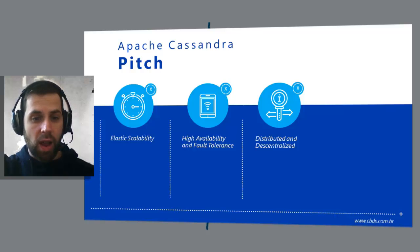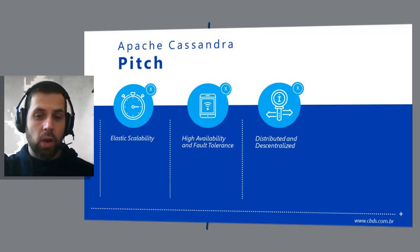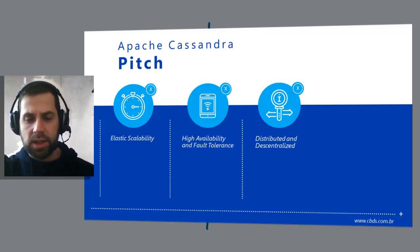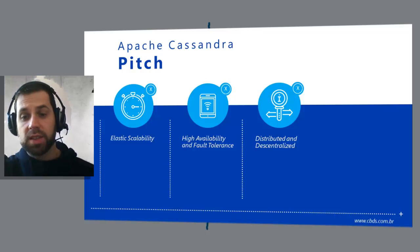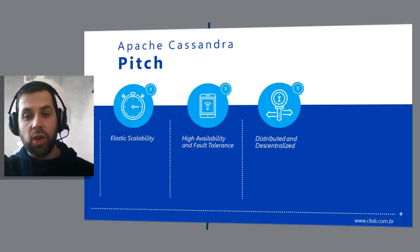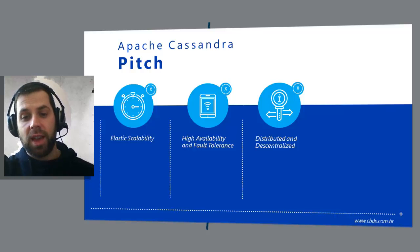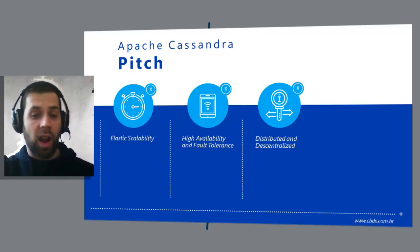Distributed and decentralized. Cassandra is distributed, meaning it is capable of running on multiple machines while appearing to the user as a unified whole. Once you start to scale, many other data stores like MySQL and Bigtable require some nodes to be set up as masters to organize other nodes, which are set up as slaves. Cassandra, however, is decentralized — every node is identical. No Cassandra node performs certain organizational operations distinctly from any other. Instead, Cassandra features a peer-to-peer protocol and uses gossip to maintain a list of nodes that are alive or dead. Decentralized means there is no single point of failure.